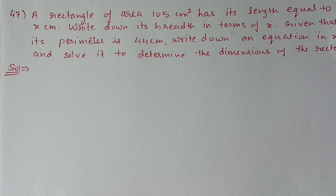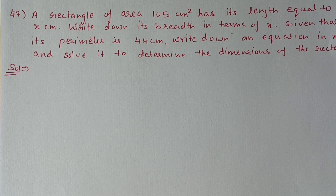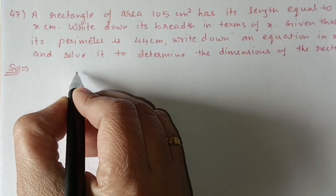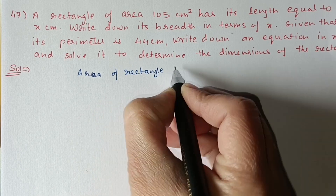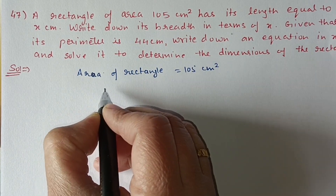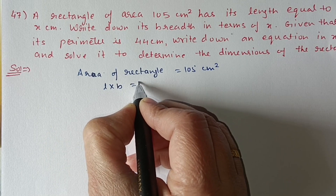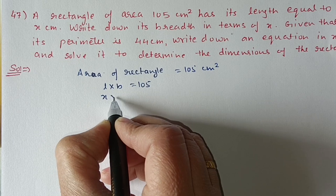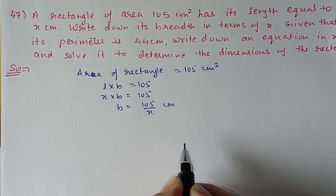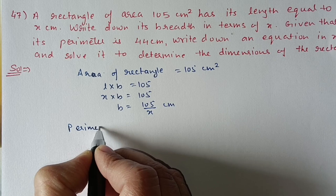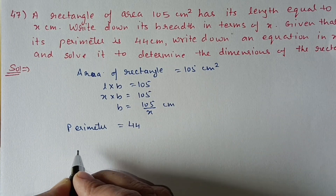Next, question number 47. A rectangle has area 105 cm² and length equal to x cm. Write the breadth in terms of x. Given the perimeter is 44 cm, form and solve an equation to find the dimensions. Since area = length × breadth = 105, and length = x, breadth = 105/x cm. Perimeter = 2(l + b) = 44.